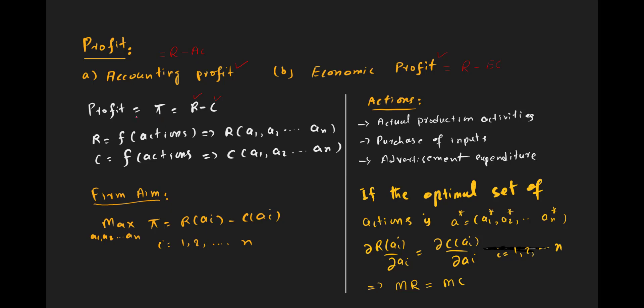Profit is the difference between total revenue and total cost of the firm. Revenue is calculated by price times quantity, but revenue depends upon many actions of the firm. Similarly, the cost of the firm also depends upon many actions.